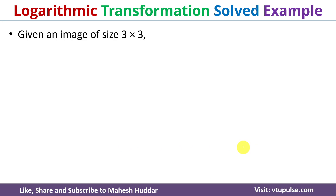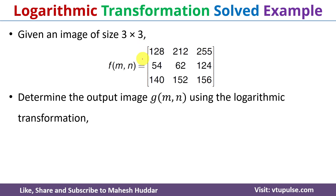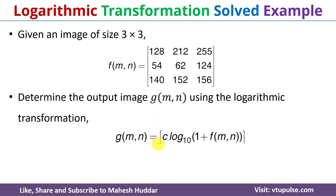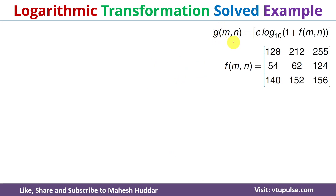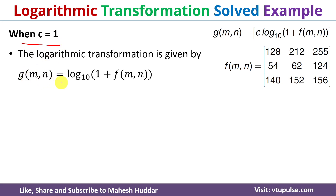The given input matrix is in the form of a 3x3 matrix. Determine the output image g using the logarithmic transformation. The function g is equal to the ceiling of c into log to the base 10. In this case we will take c is equal to 1, and c is equal to L divided by log to the base 10. We know the logarithmic transformation function that is g. In this equation we will replace c by 1, so g is equal to log.